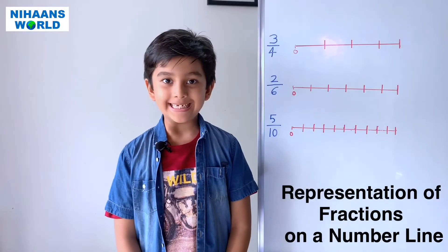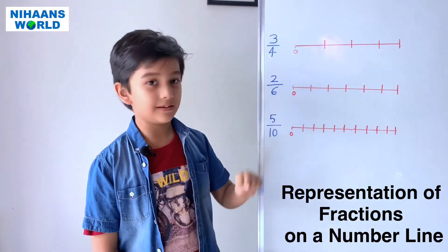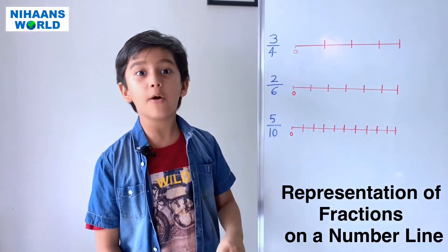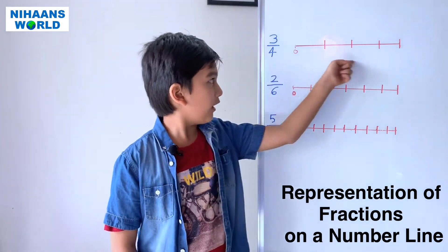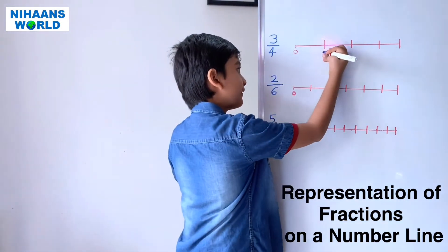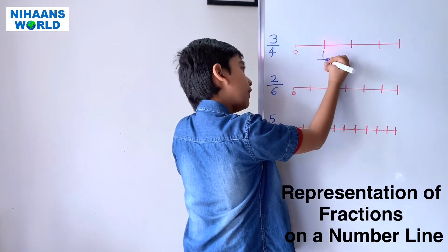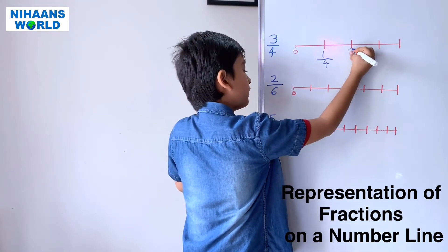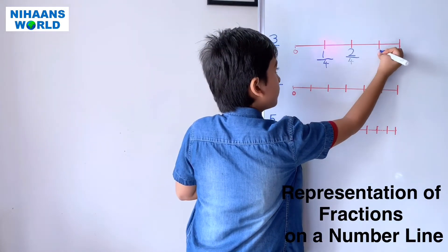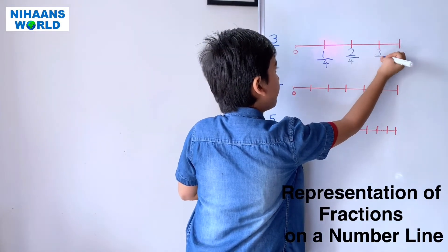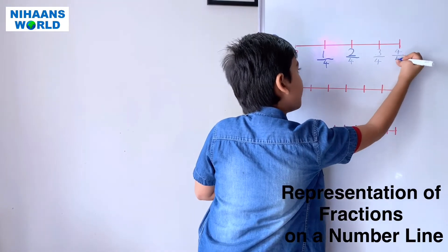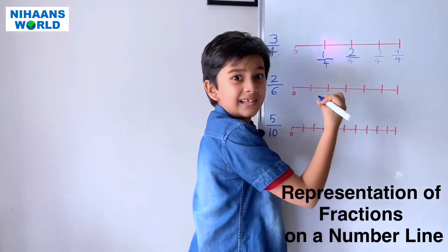Here four fourth is equal to one. Friends, let's solve the first example. It is 3 by 4. Since 4 is the denominator, we divide into 4 parts. Let's start writing: 1 by 4, 2 by 4, 3 by 4, 4 by 4. So where is the answer?